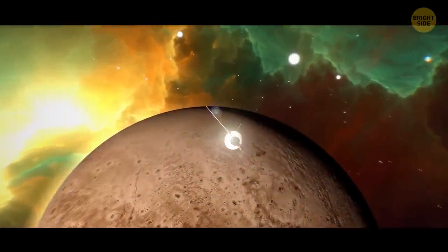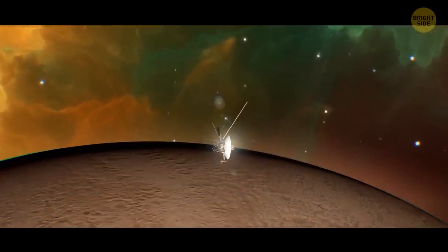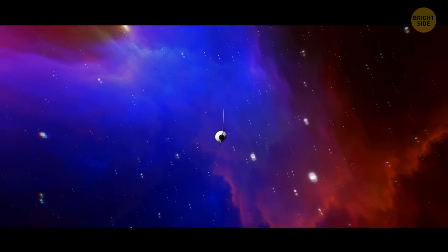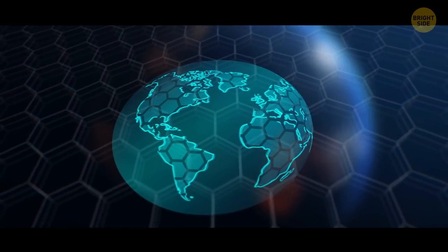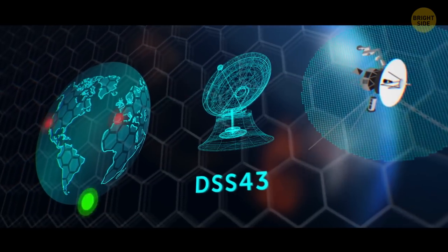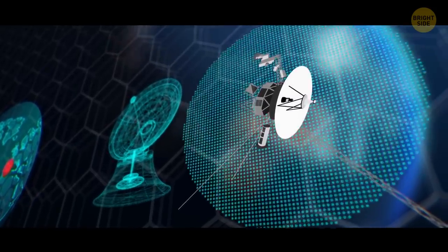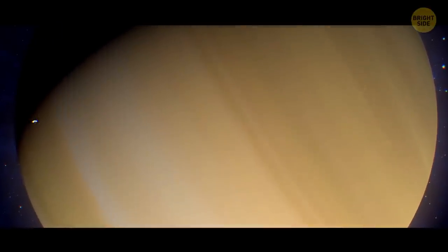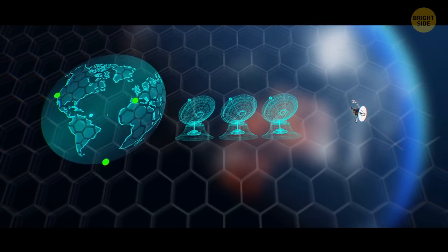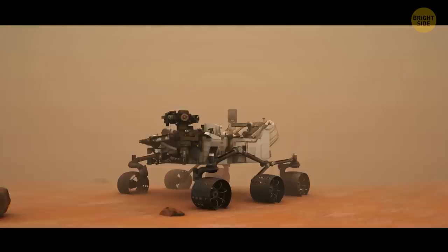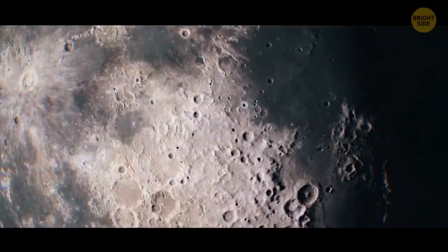To make this detour, Voyager 2 had to travel over the gas giant's north pole. But this changed the probe's trajectory, deflecting it southward relative to the planes of the planets. And now, the spacecraft is so far away that it's out of reach of the radio antennas in the Northern Hemisphere. This makes DSS-43 the only dish powerful enough to send commands to Voyager 2. Voyager 1, the probe's faster-traveling twin, took a different path. The upgrade can also benefit other space missions, like the Mars Perseverance rover.